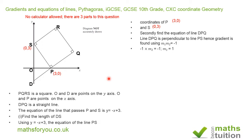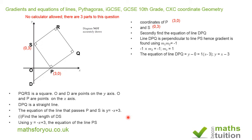So M₂ = 1, since M₁ = -1 from the equation of line SP. We know the coordinates of one point on the line, which is P at (3, 0). So doing (y - 0) / (x - 3) = 1, the equation of line DPQ is y = x - 3. On the y-axis, x = 0, so the coordinates of point D are (0, -3).